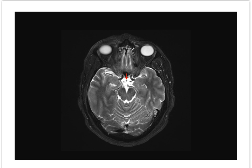Moving higher, we see the infundibulum coursing through the suprasellar cistern between the hypothalamus above and the pituitary gland in the sella below. The interpeduncular cistern, which we can also see on sagittal and coronal images, is a good landmark for the oculomotor or third nerve exit site.